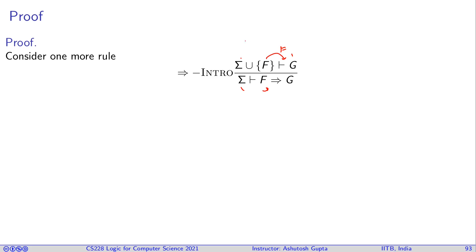Well, let's take a model m such that m satisfies sigma. There are two possibilities. One possibility is m satisfies F. If that is the case, then m satisfies sigma union F. Therefore, by induction hypothesis, m also satisfies G. If m satisfies G, then m satisfies F implies G. Therefore, we're done.